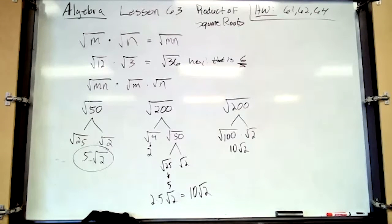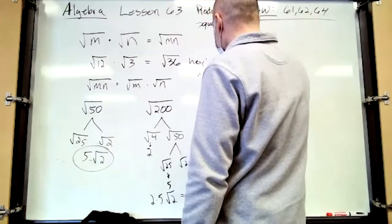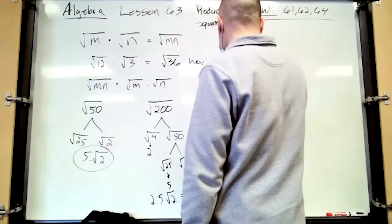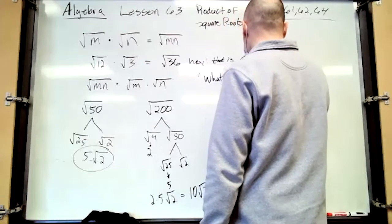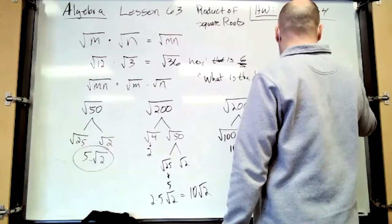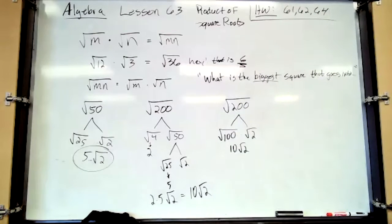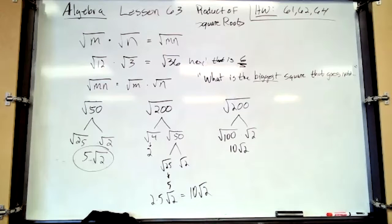You're looking for squares that go in there, but more specifically, write this magic question down: What is the biggest square that goes into whatever you're talking about — whatever's underneath that radical? If you can find the biggest square, then you have one step. If you find a smaller square, that's okay — you just have to do it in a couple of steps. But every step you add, the more confusion and the more potential mistakes.